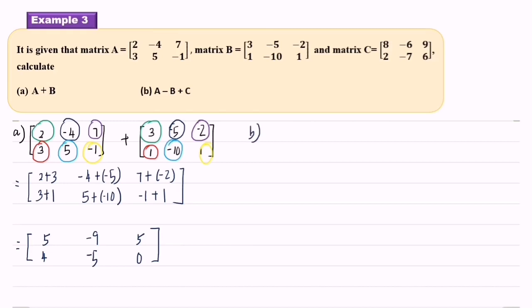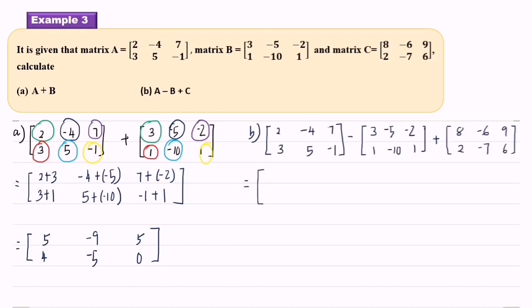Part B: matrix A minus matrix B plus matrix C. Then we add and subtract the corresponding elements. So the first element: 2 minus 3 plus 8.